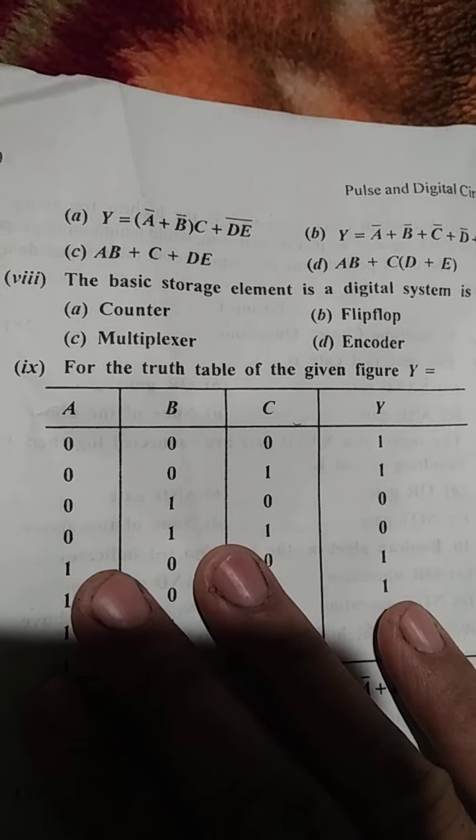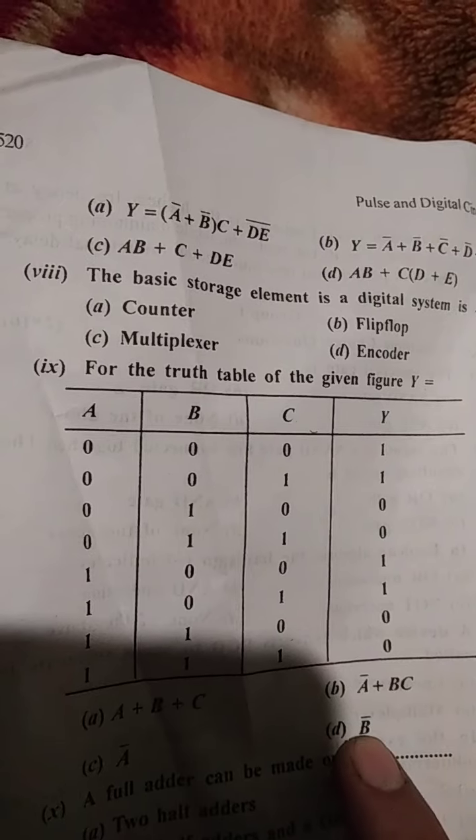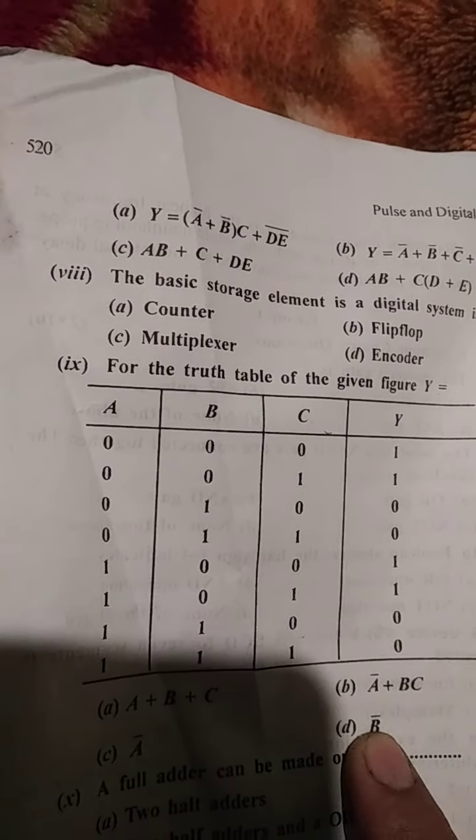Fourth one is the truth table. What is the truth table? A, B, C: 0, 0, 1; 0, 1, 0; 1, 0, 0; 1, 1, 0. So the answer is B.